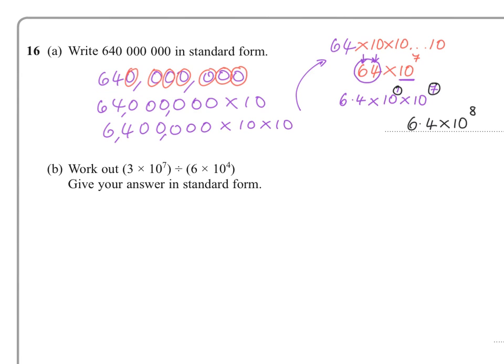For part B, you've got to work out 3 times 10 to the power of 7 divided by, and this is why I'm writing it this way, divided by 6 times 10 to the power of 4. Well, let's look at these ordinary numbers here first. If you did 3 divided by 6, what would you get? Well, hopefully you can see that would be a half.